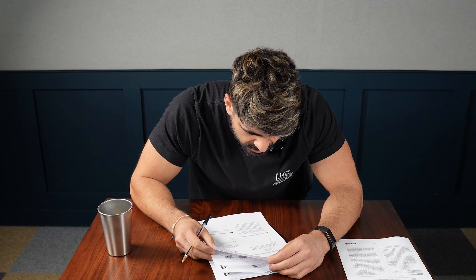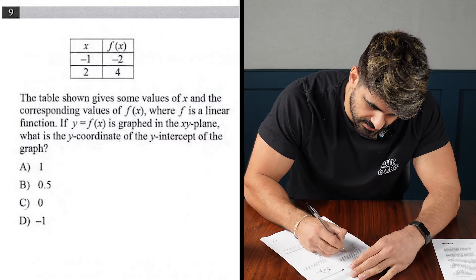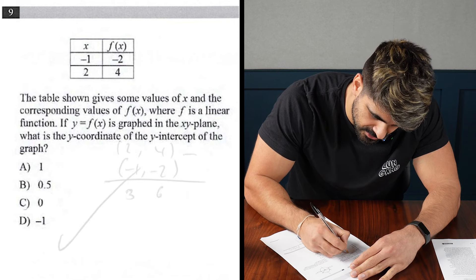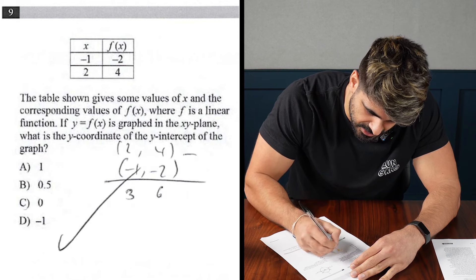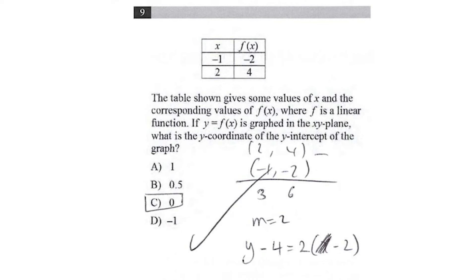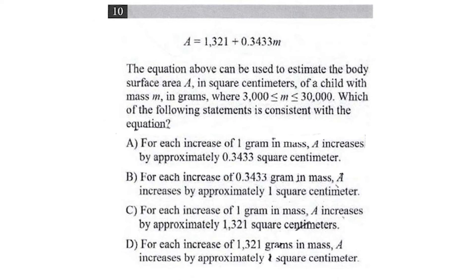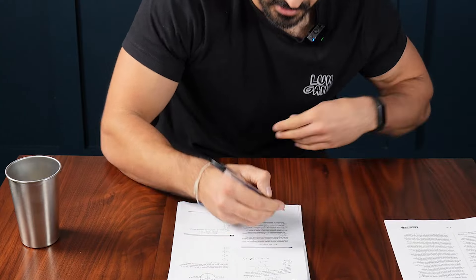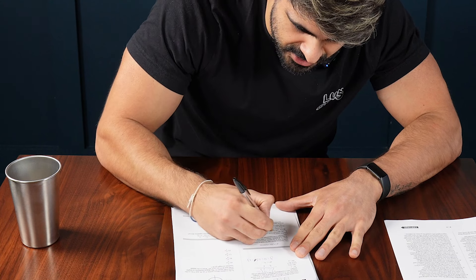The table shown gives some values of x. What is the y-coordinate of the y-intercept of the graph? Alright, so minus 1, minus 2, 2, 4. So when x is 0, move that over. Minus 4. Oh, just 0. I guess you could have seen that. Which of the following statements is consistent with the equation? Oh, then that's the answer. I'm not even going to bother reading the rest. It's just A.